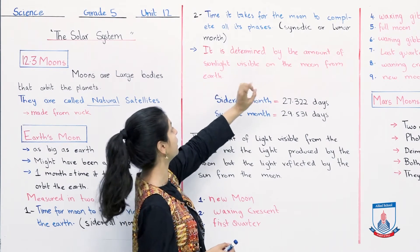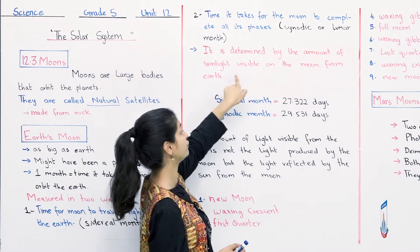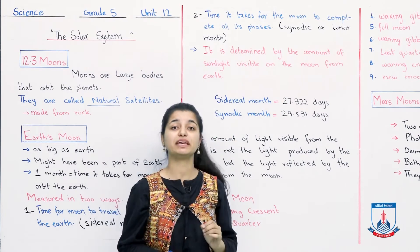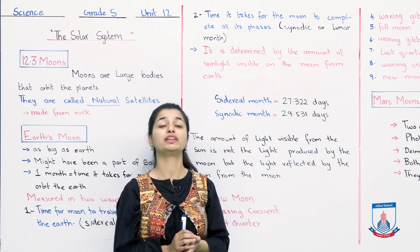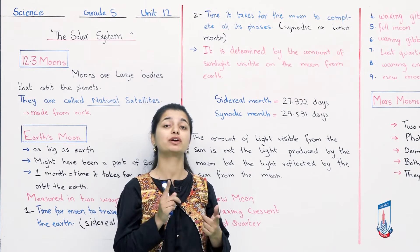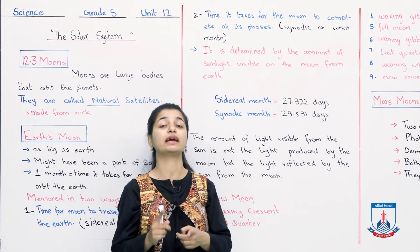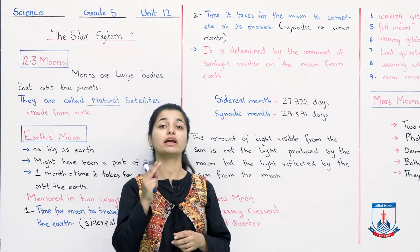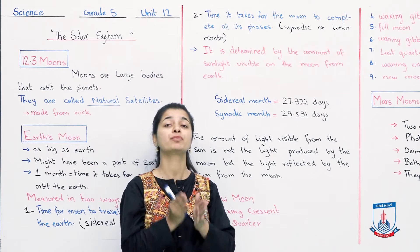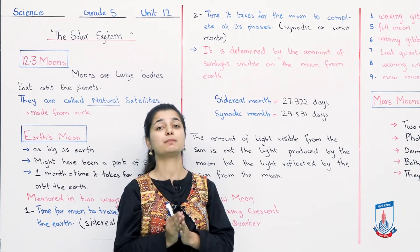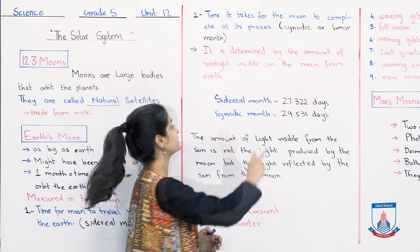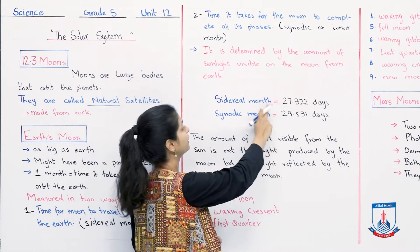It is determined by the amount of sunlight visible on the moon from the earth. Doosra tariqa mein, aap dekhti ho ki moon ka phase sub complete ho raha hai, ki us hisaab se ki woh kitni light reflect kar raha hai suraj ki. Aap dekhti ho ki kitna moon jo hai woh visible hai suraj ki light ki wajah se, aur uske hisaab se aap uske phase ko define karte ho. Aur jo sidereal month hota hai, woh kitna lamba hota hai?